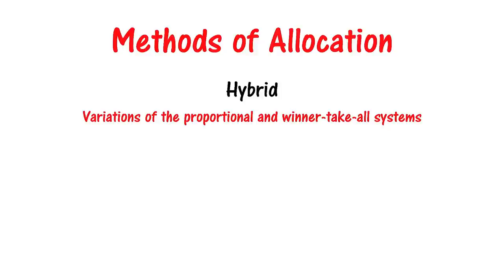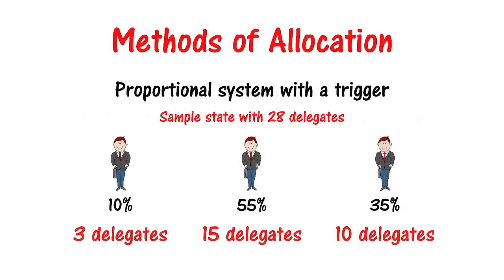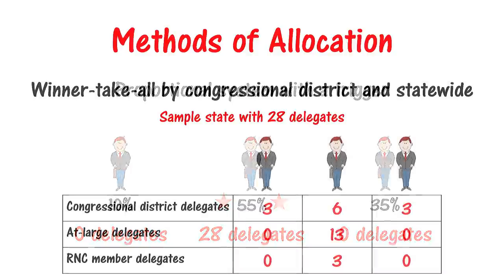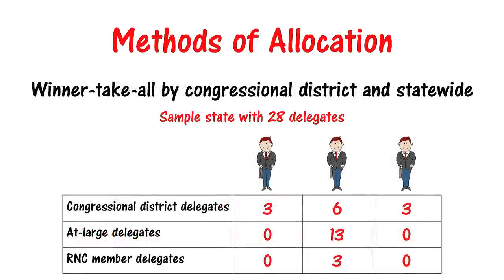Here are two examples of hybrid systems. A state may use a proportional system with a trigger, meaning the delegate allocation will change from a proportional to a winner-take-all system if a candidate receives a majority of votes. Or a state may use a winner-take-all system such that candidates can win congressional district delegates based on the results in each congressional district, while the at-large delegates and even RNC member delegates are allocated based on the statewide results.